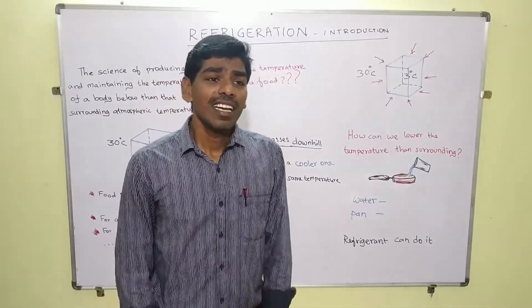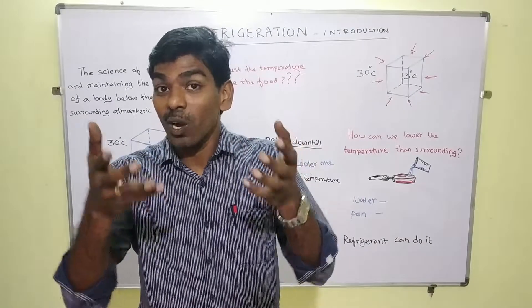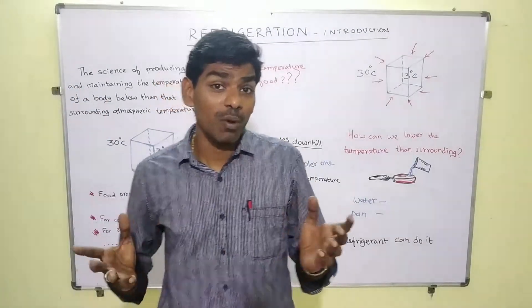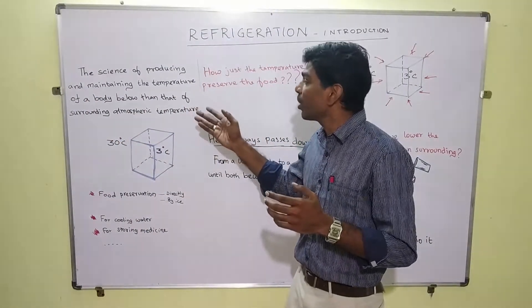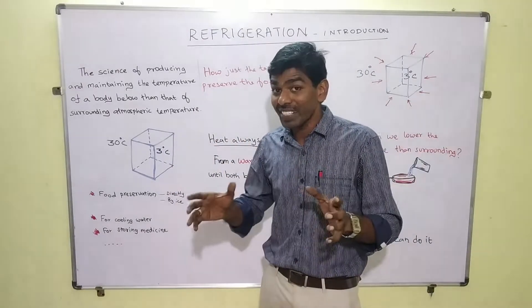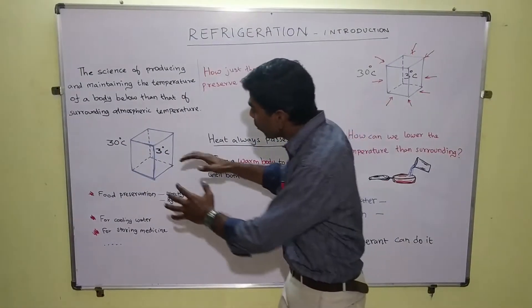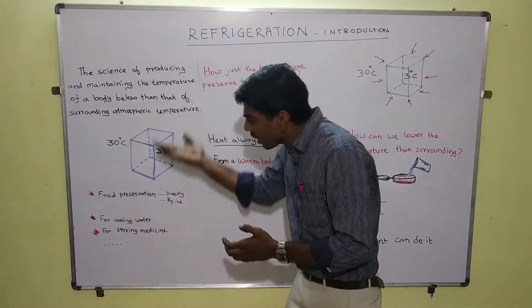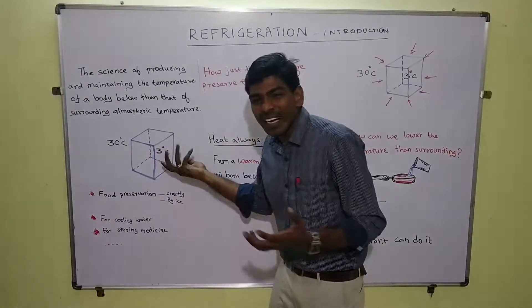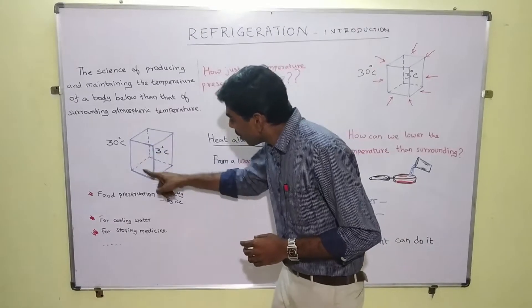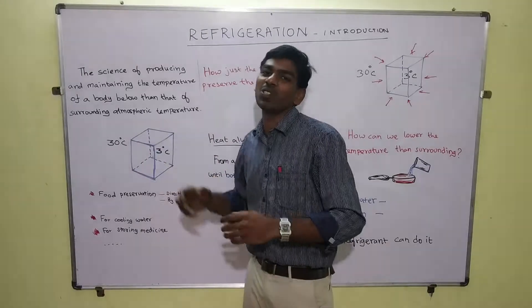What is refrigeration? It is the science of producing and maintaining the temperature of a body lower than the surrounding temperature. For example, let us consider the atmospheric temperature to be around 30 degrees centigrade, and if we want to have a space at a lower temperature — around 3 or 4 degrees centigrade — and maintain it, this process is known as refrigeration.